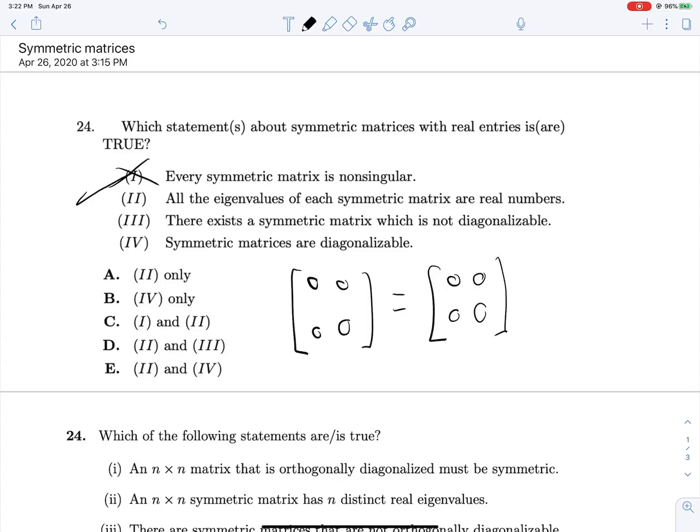3. There exists a symmetric matrix which is not diagonalizable. Well, what does the spectral theorem say about that? It says an n-by-n symmetric matrix A has the following properties, down to D. A is orthogonally diagonalizable. So just being symmetric implies diagonalizability. So this is false because all symmetric matrices are diagonalizable.